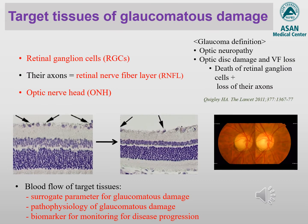Glaucoma is defined as progressive optic neuropathy, which is characterized by retinal ganglion cell death and loss of their axons. Therefore, the main target tissues of glaucoma damage consist of three parts: retinal ganglion cells, retinal nerve fiber layer, and optic nerve head. Studying blood flow at these target tissues has many clinical relevances.